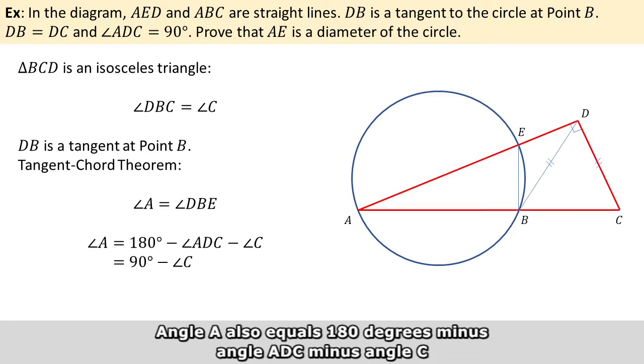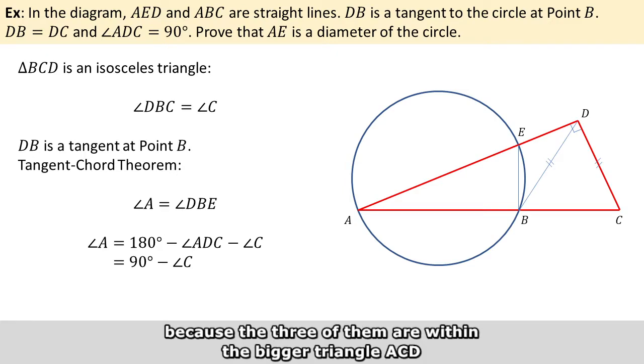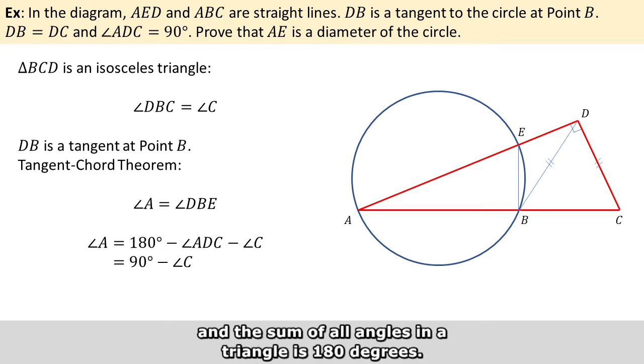Angle A also equals 180 degrees minus angle ADC minus angle C, because the three of them are within a bigger triangle, and the sum of all angles in a triangle is 180 degrees.